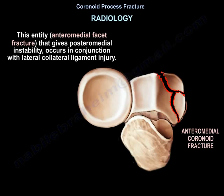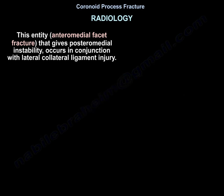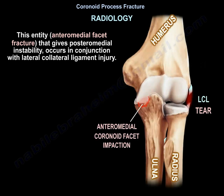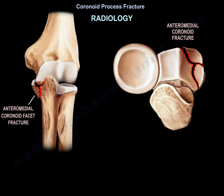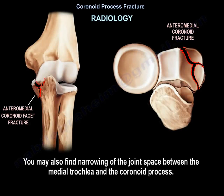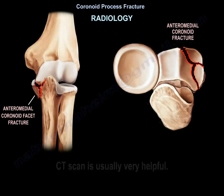The anterior medial facet fracture gives posteromedial instability and occurs in conjunction with lateral collateral ligament injury. When you see this fracture pattern, suspect anterior medial coronoid fracture — especially when you cannot find a radial head fracture. You may also find narrowing of the joint space between the medial trochlea and the coronoid process. CT scan is usually very helpful.